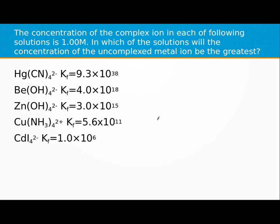Alright, we've got the concentration of a complex ion in each of the following solutions is 1 molar. And which of the solutions will the concentration of the uncomplexed metal ion be the greatest?